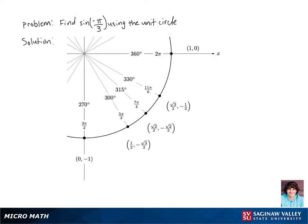Let's find sine of negative pi thirds using the unit circle. We're going to start at the point on our unit circle and travel a distance of pi thirds clockwise on the unit circle, since it's negative.